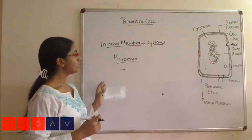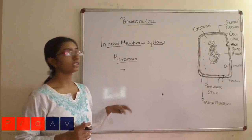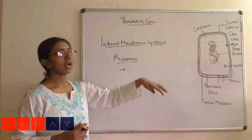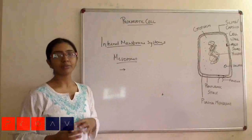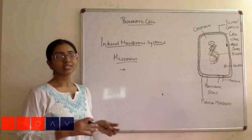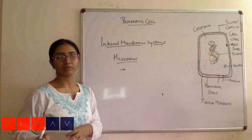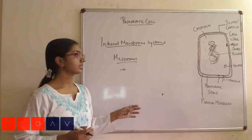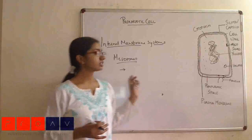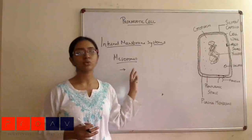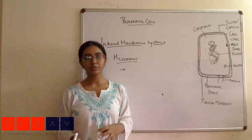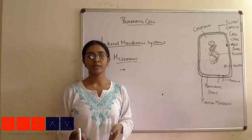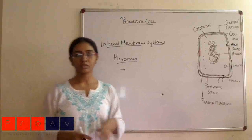Apart from mesosomes, there are various other structures associated with the plasma membrane that serve as replacements for the organelles that a eukaryotic cell would have, which are not present in the prokaryotic cell. However, these structures, including mesosomes, may or may not be present and at least differ across the various kinds of bacteria.